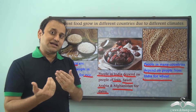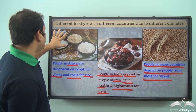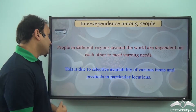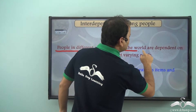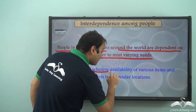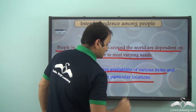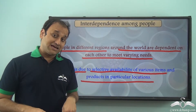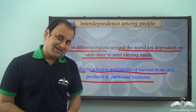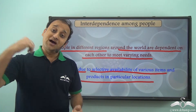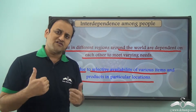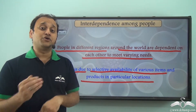So you see, different parts of the world are dependent on each other for food items. Interdependence among people is a very common scenario observed around the world. People in different regions are dependent on each other to meet varying needs. This is due to selective availability of various items and products in particular locations. For example, rice can be grown in India, but for dates they need to get the supply from Afghanistan. Afghanistan can grow dates better while people in India can grow rice better, and as a result all of them are interdependent on each other for different items.